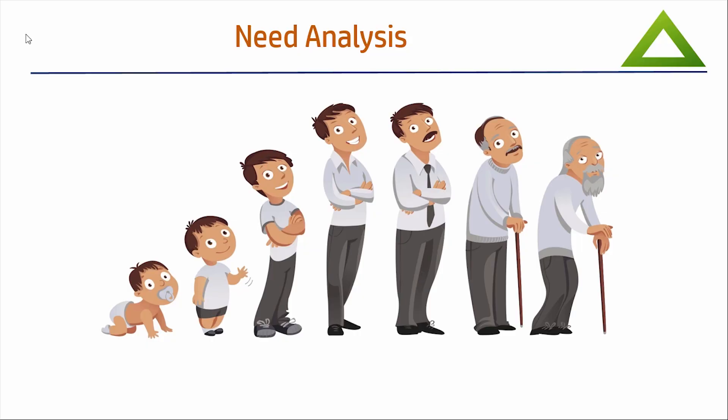First we talk about need analysis. In insurance we always understand that as a person grows, his responsibility increases, his liability increases, and probably his dependents also increase. So up to a certain age he should keep on adding insurance because dependents increase and liability increases. As he moves further in life and his wealth increases, he is in a position of self-insurance — meaning he has enough money available so that the family does not have to suffer financial losses.